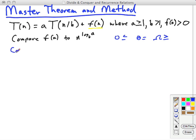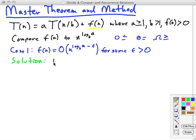Let's look at the first case, case one. This is the big O case. This minus epsilon is outside the scope of the log. So essentially this is saying that f(n) is polynomially smaller, big O, than the reference function n to log base b of a. In case one, the solution is T(n) is theta of the reference function.